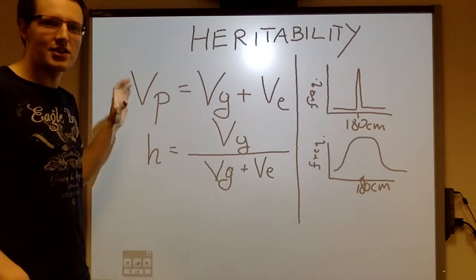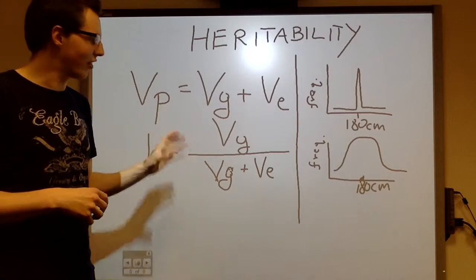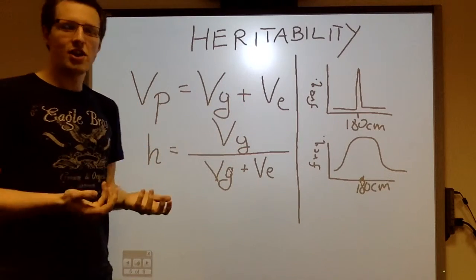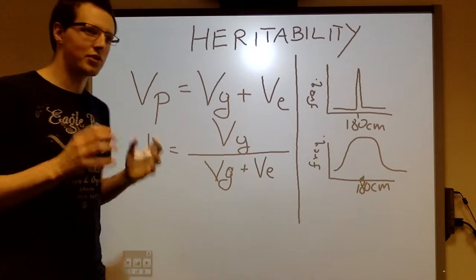Now, phenotypic variance is the combination of all the genetic variance and all the environmental variance. And that's the total phenotypic variance within a population.